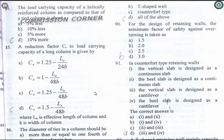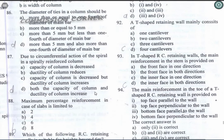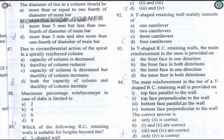Question 84: The load carrying capacity of a helically reinforced column compared to a tied column is about 5% more. Option C is correct. Question 85: A reduction factor CR for load carrying capacity of a column is given by CR = 1.25 − LE/48, where LE is the effective length and B is the width of the column. Question 86: The diameter of ties in a column should be more than 5 mm and also more than one-fourth the diameter of the main bar. Option D is correct.